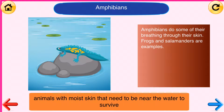Amphibians. Animals with moist skin that need to be near the water to survive. Amphibians do some of their breathing through their skin. Frogs and salamanders are examples.